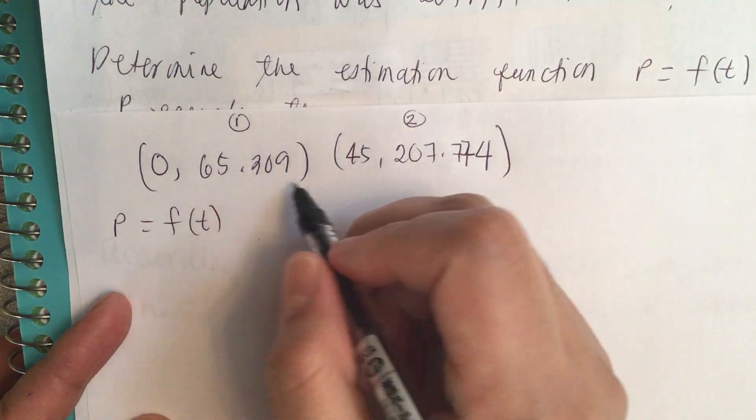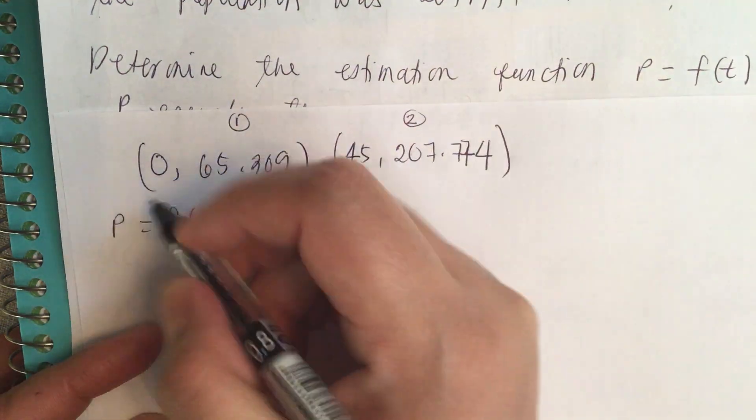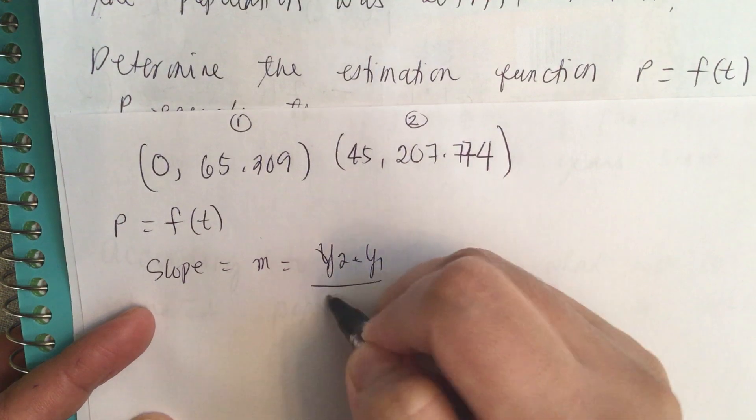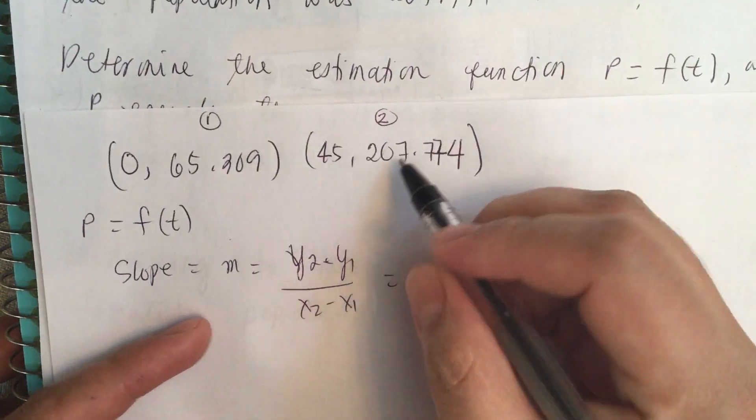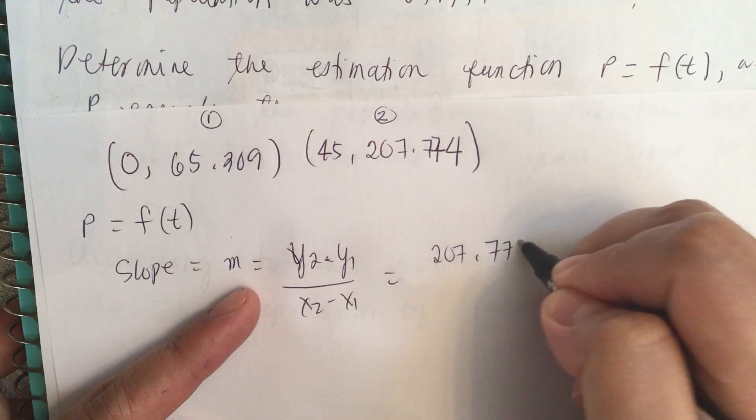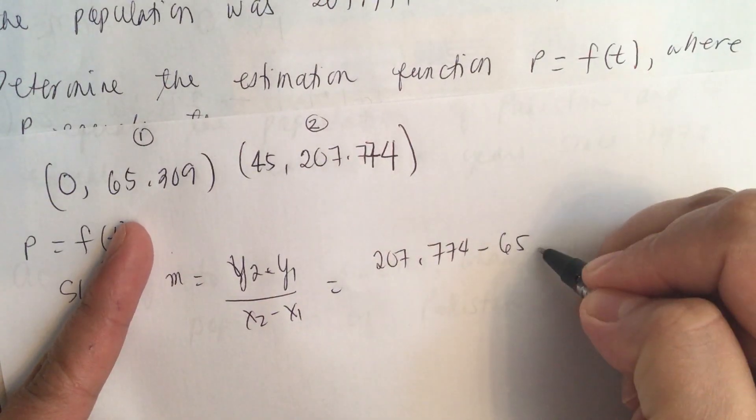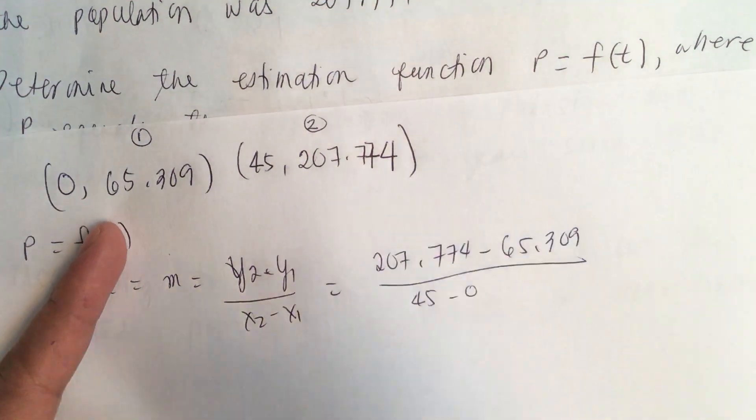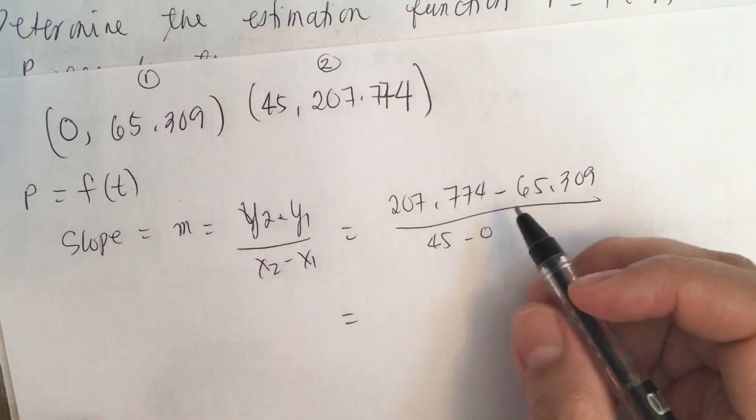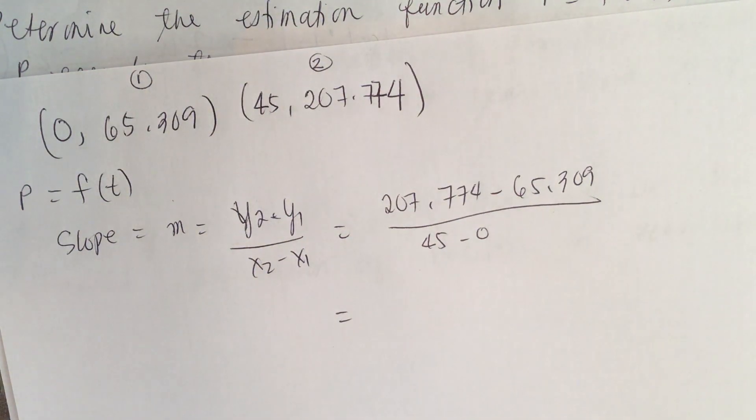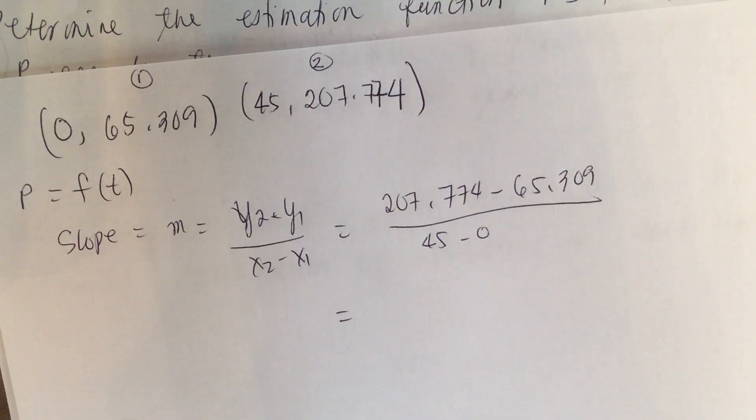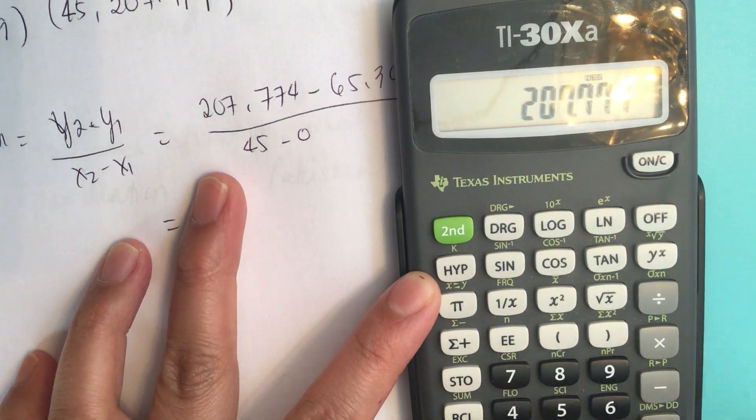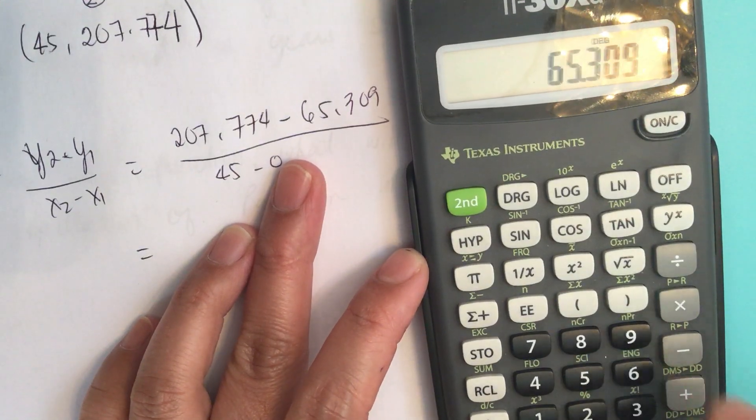We have to find the slope first. The formula for slope is equal to M equals Y2 minus Y1 over X2 minus X1. This is equal to 207.774 minus 65.309 all over X2, 45 minus 0.